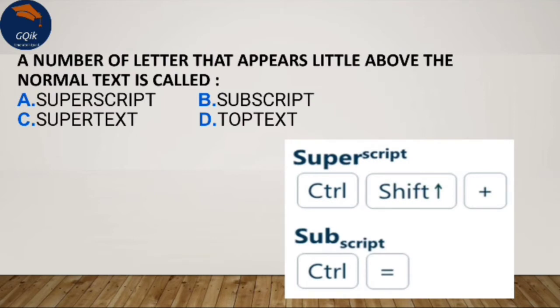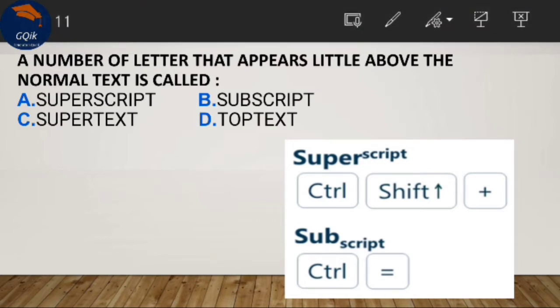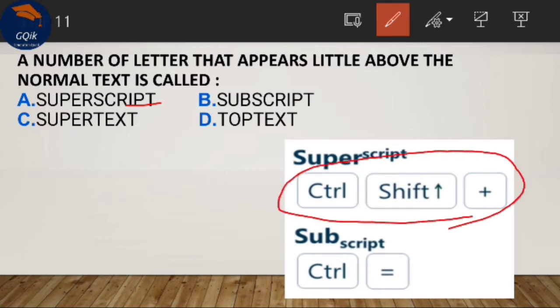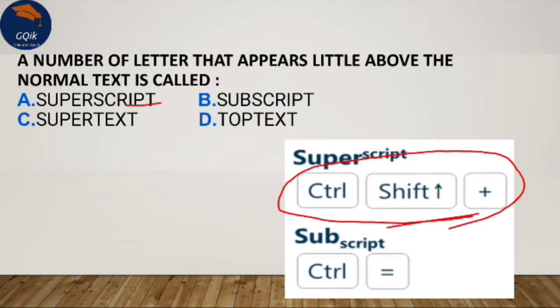Next question: a number or letter that appears a little above the normal text is called what? That is the superscript. The shortcut for superscript is Ctrl+Shift+Plus. When you select the text and press Ctrl+Shift+Plus, it becomes superscript. And Ctrl+Equal is the shortcut for subscript.